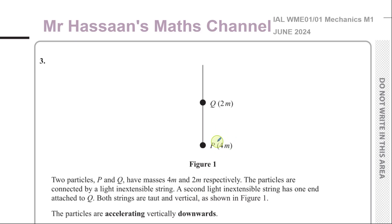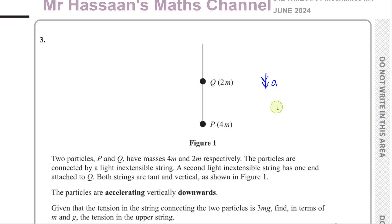Their masses are given as 4m and 2m respectively. The particles are connected by a light and inextensible string, and a second light and inextensible string has one end attached to Q. Both strings are taut and vertical as shown in figure one. The particles are accelerating downwards. Given that the tension in the string connecting the two particles is 3mg, that is the tension in the lower string, find in terms of mg the tension in the upper string.